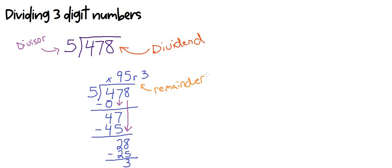That leftover part is remainder three, so our answer is 95 remainder 3. The fancy word for the answer in math is called the quotient. So just to review: the dividend is the number being divided; the divisor is the number going into the dividend; the remainder is the leftover number when there is one; and the overall answer is called the quotient.